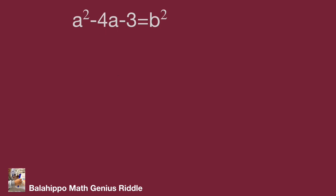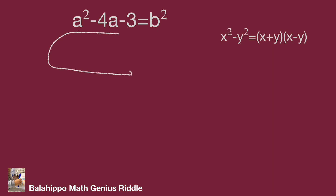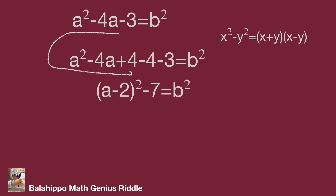Next, I'm going to utilize the formula x squared minus y squared equal to (x plus y)(x minus y). To generate perfect squares on the left side of the equation, I add 4 after a squared minus 4a. It becomes quantity (a minus 2) squared minus 7 equal to b squared.